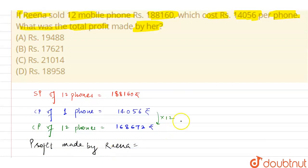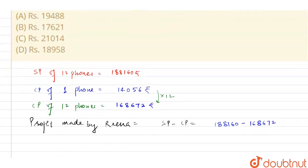So we know how to calculate profit - SP minus CP. So SP is Rs. 188,160 minus CP which is Rs. 168,672. This value comes out to Rs. 19,488. This is the profit earned by Reena in this transaction.